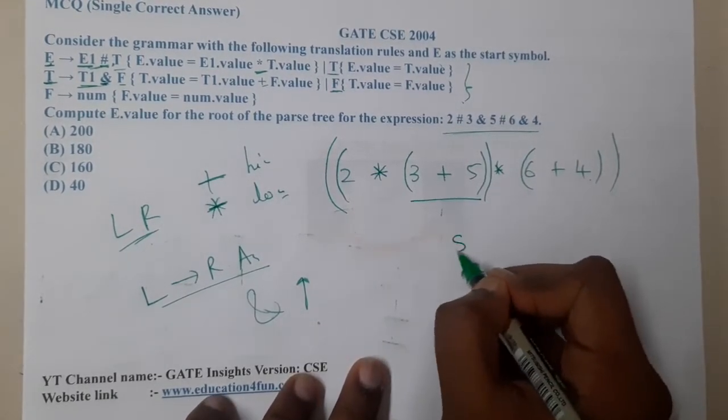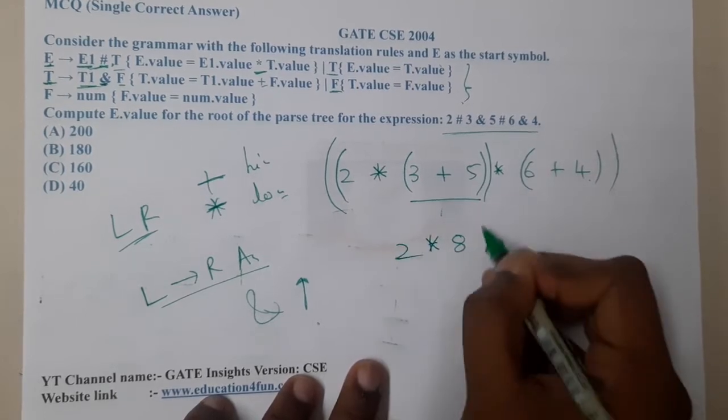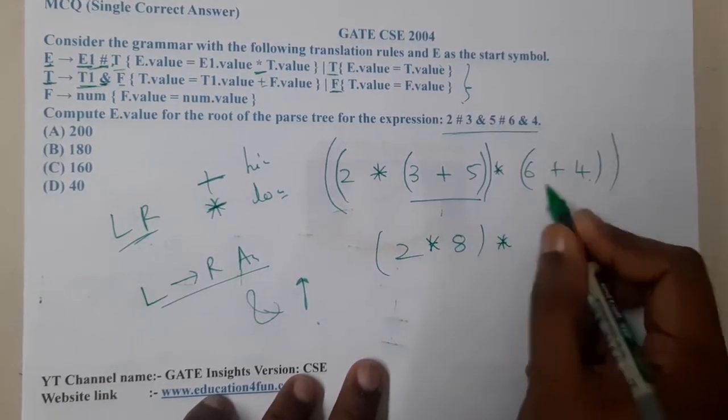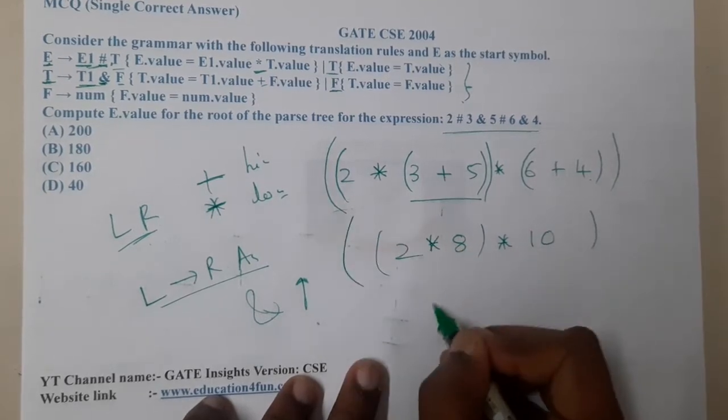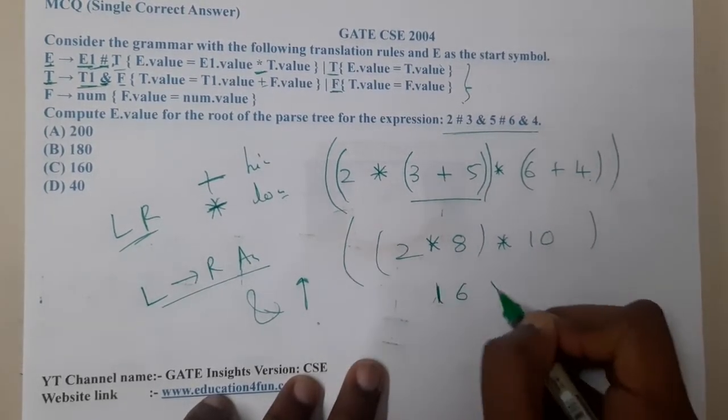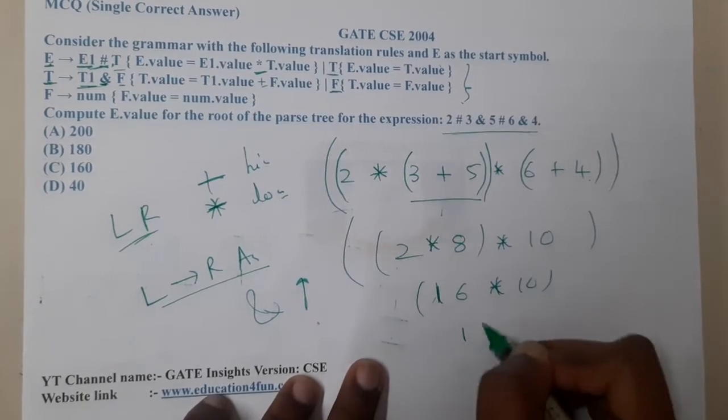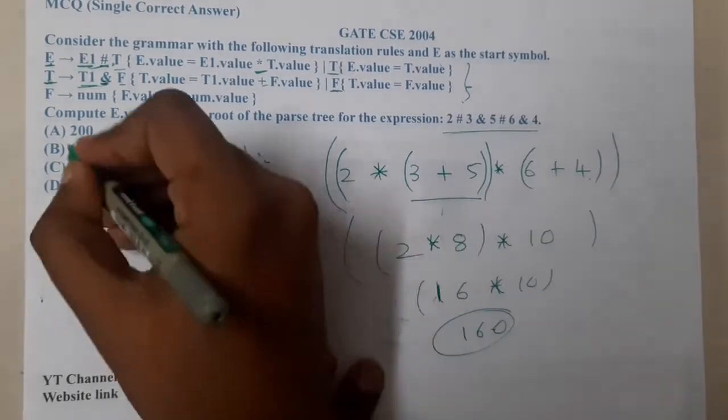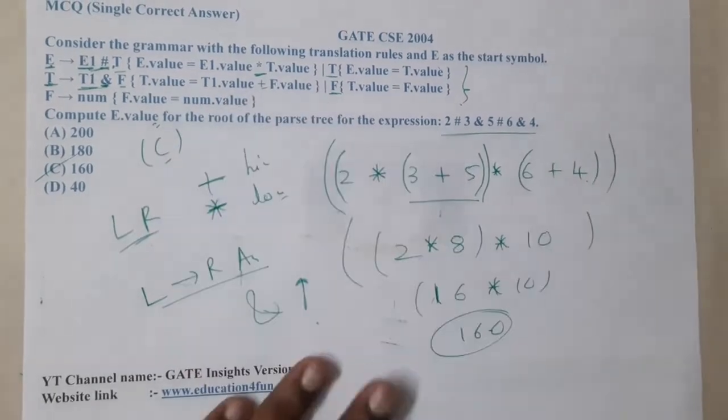What is 3 plus 5? Which is nothing but 8. So 8 into 2. Into what is 6 plus 4? That is 10. What is 8 into 2? That is 16 into 10, which is nothing but 160. So 160 is the result. C is the correct answer.